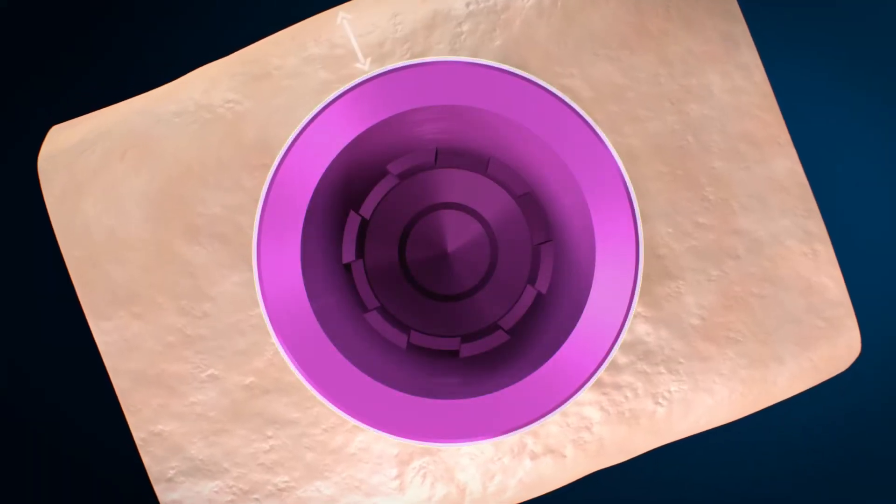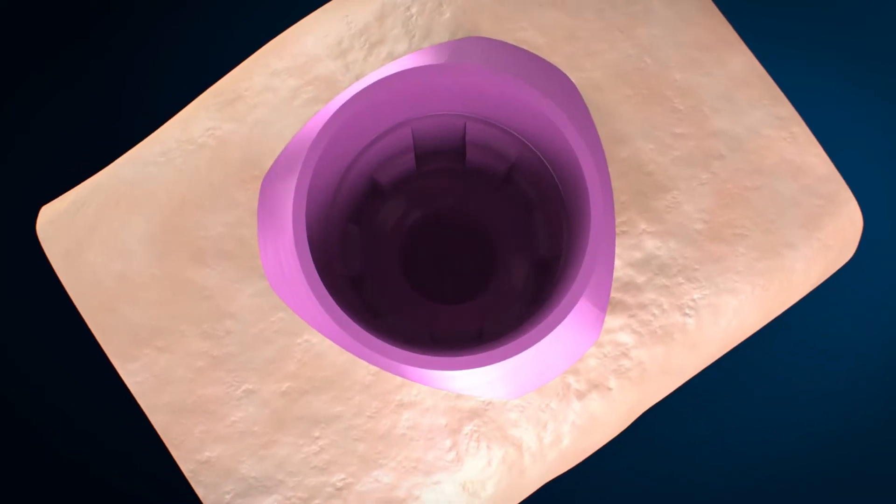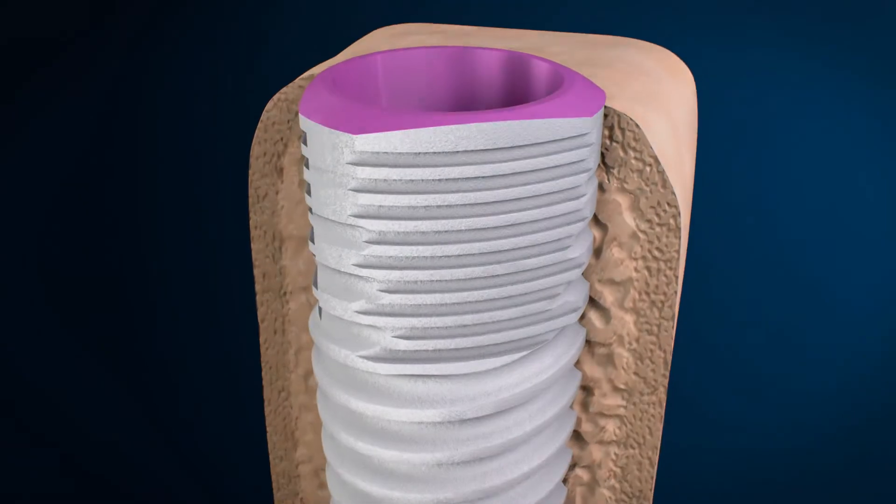All other implants have a circular design whereas the V3 has a triangular neck. This modification in design is responsible for several key advantages that the V3 has over all other implants.